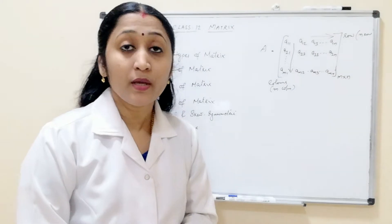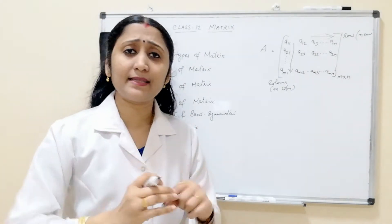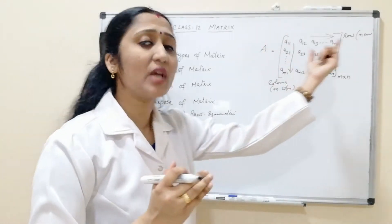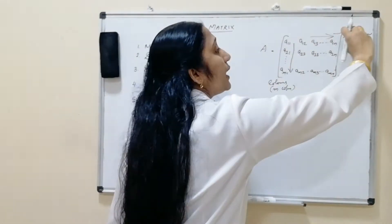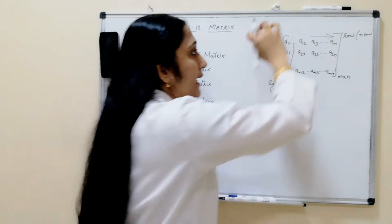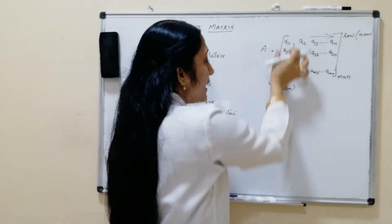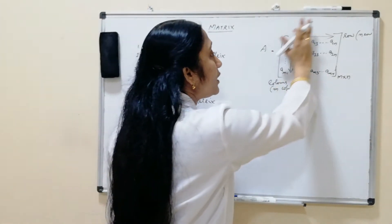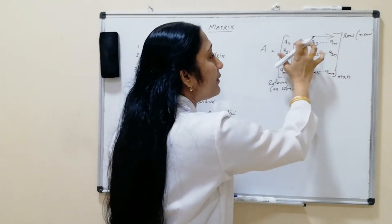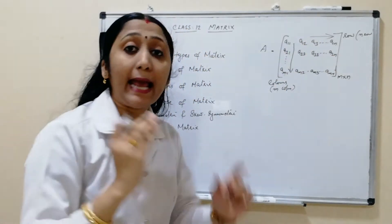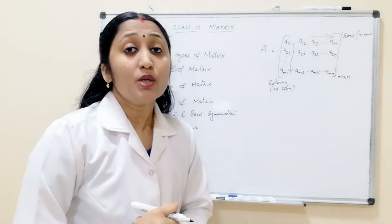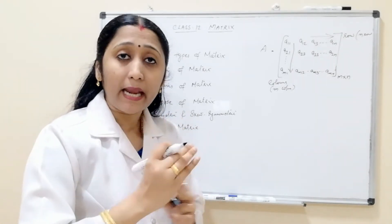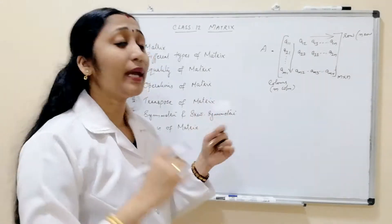So basically a matrix is simply a rectangular arrangement of columns and rows. The horizontal line is called rows and the vertical line is called columns. The elements inside the rectangle — a11, a12, etc. — are called elements of the matrix. The order of the matrix is m × n.